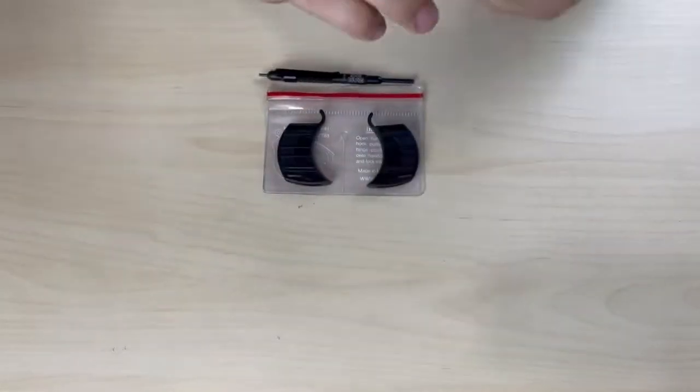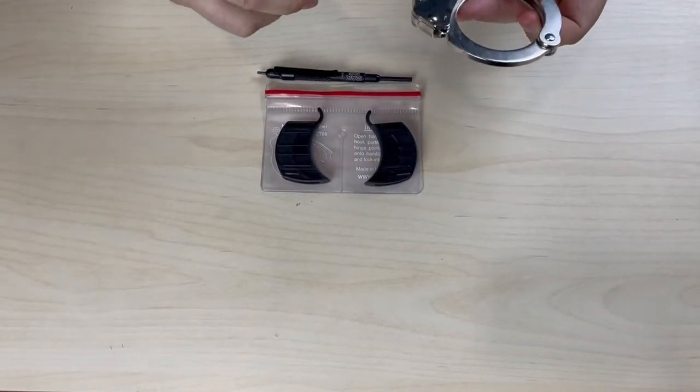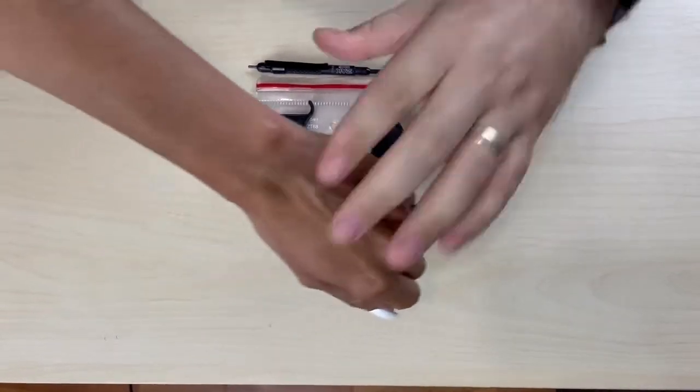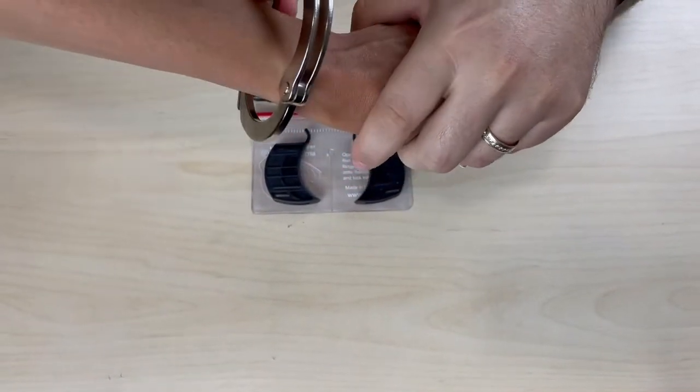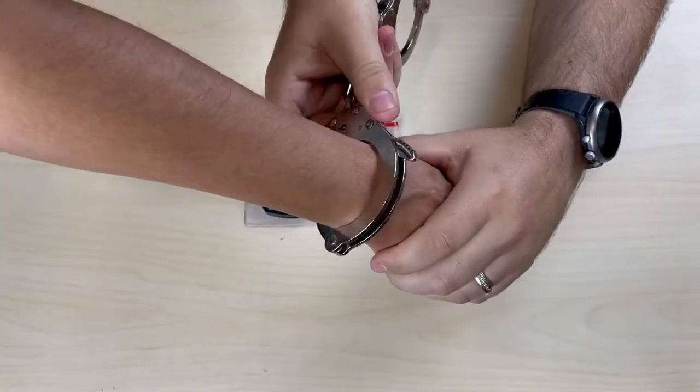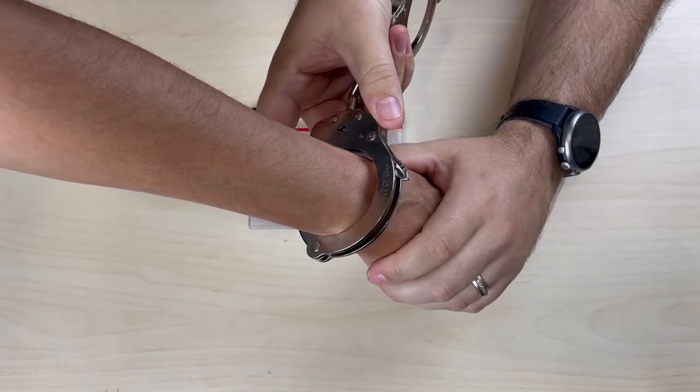So what we have here today is the Peerless model 700, and we're going to apply it to our assistant so you can see what it would look like on a person with a smaller wrist. As you can see, when we put the handcuffs on, we can actually get that to the last setting and there's still some space.